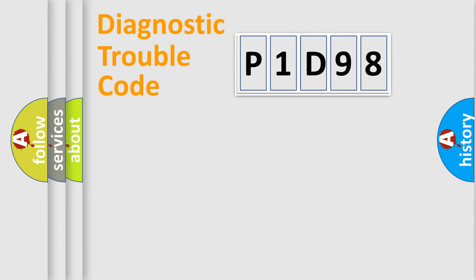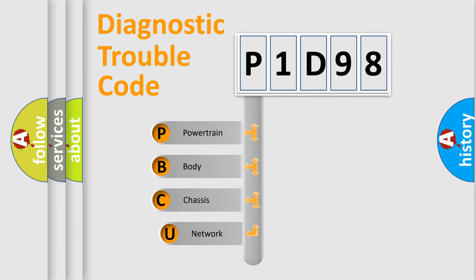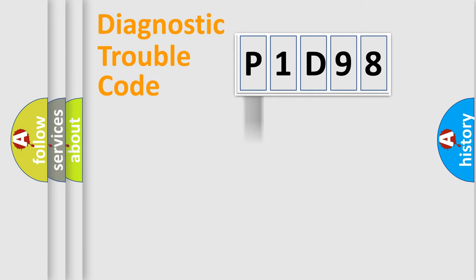Let's look at the history of diagnostic fault code composition according to the OBD2 protocol, which is unified for all automakers since 2000. We divide the electric system of an automobile into four basic units: Powertrain, Body, Chassis, and Network.